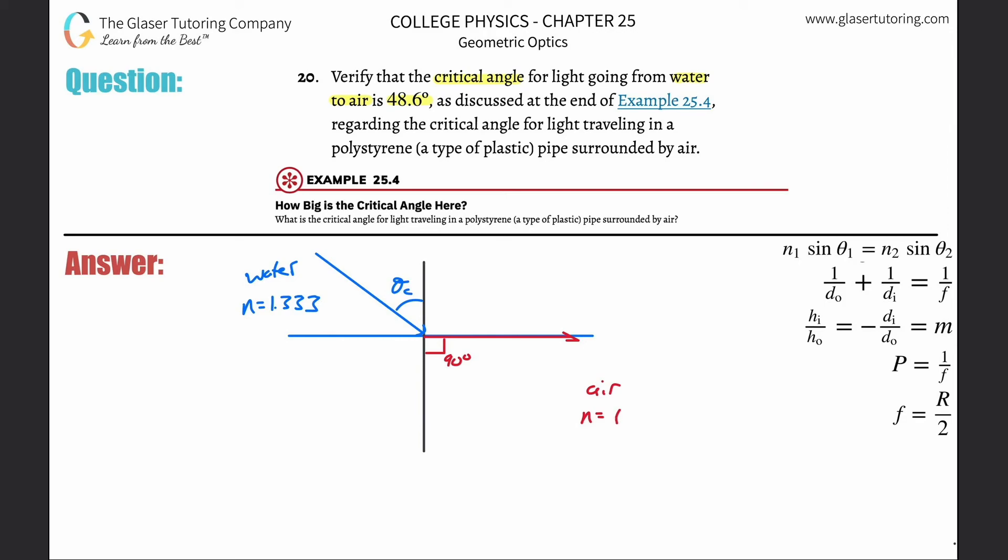So how do we then find this theta? You can call this theta sub 1 if you want, it doesn't matter. N sub 1 times the sine of theta sub 1, we're using Snell's law. The index of refraction for the incident ray multiplied by the sine of the incident angle will equal the index of refraction for the refracted ray multiplied by the sine of the angle of refraction.